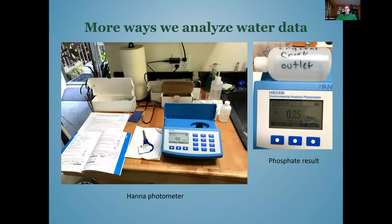Another piece of equipment we use is called a photometer. You collect a sample, put it into a little glass tube, insert it into the machine, mix it with a reagent, and it analyzes how that reagent affects the light — giving you a very detailed reading on different types of chemicals. We use this for nitrate, phosphate, and copper, periodically collecting data on the streams we monitor.